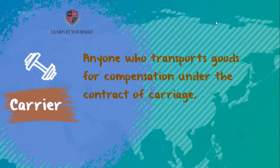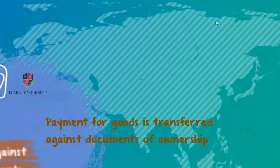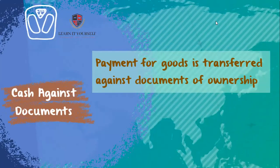Next we have carrier — basically an individual or entity that transports persons or goods for compensation under a contract of carriage. Following that is the cash and documents process, a very common process practised in international trade transactions, in which a clearing house or other intermediary transfers the title documents to the buyer upon payment in cash.